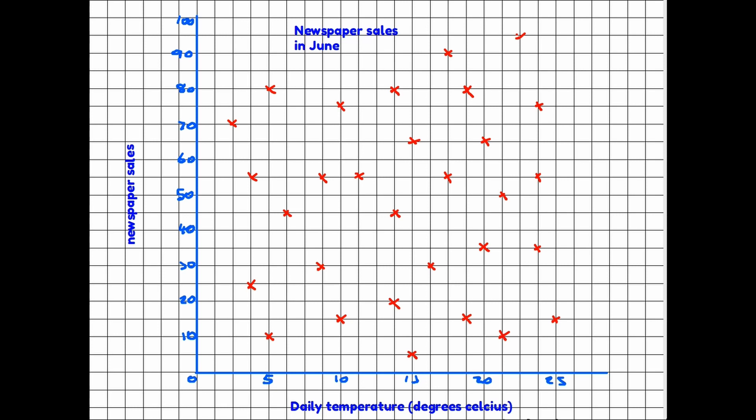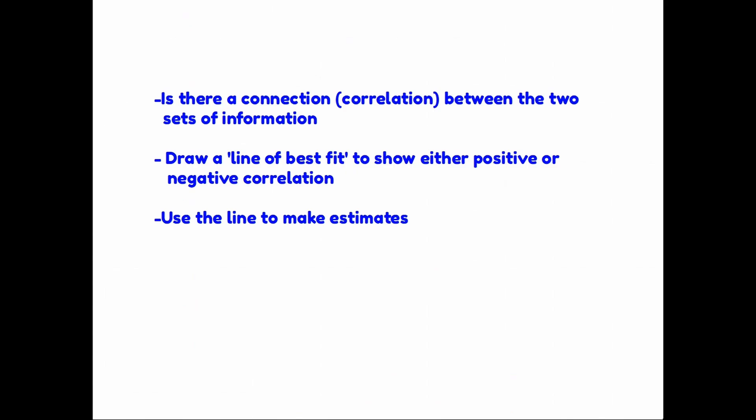In this final example, we are still looking at the daily temperature but rather than hot drink sales, we are now looking at newspaper sales. Someone has recorded the temperature each day and also how many newspapers have been sold. You can see from the crosses on this particular graph that they are far more widely spread throughout the graph. There is no concentration of crosses going in any particular direction. Therefore, quite simply, we can say there is no connection between the number of newspapers being sold and the temperature of any given day - therefore there is no correlation.